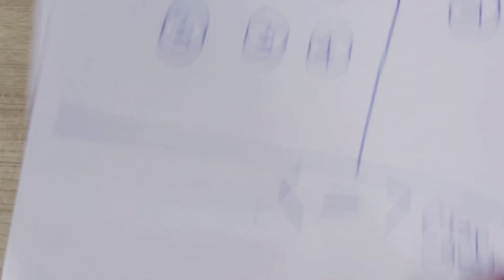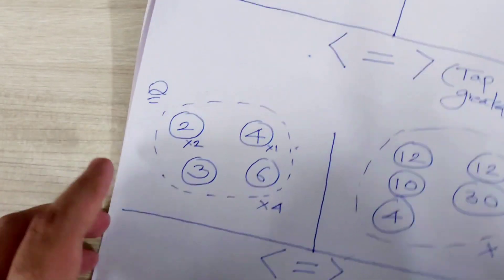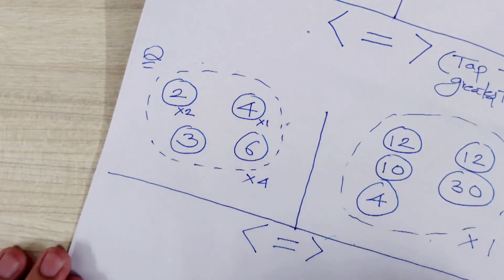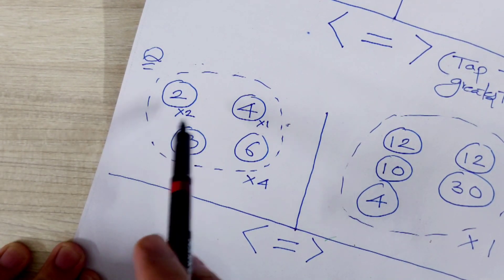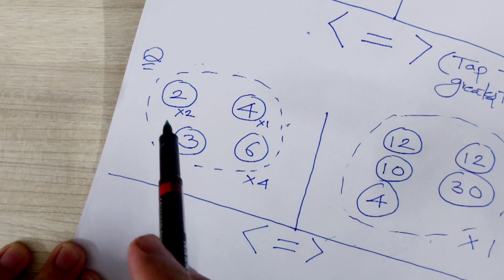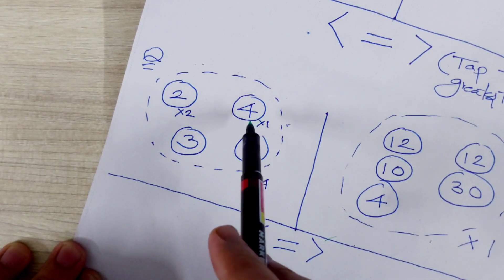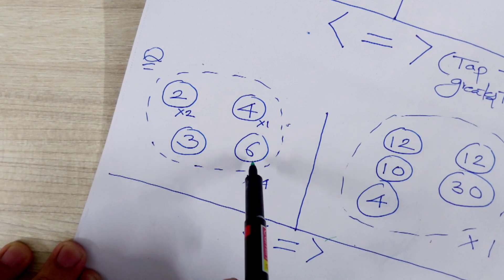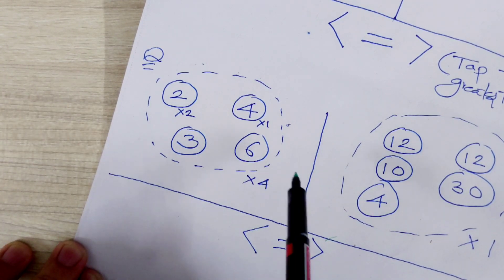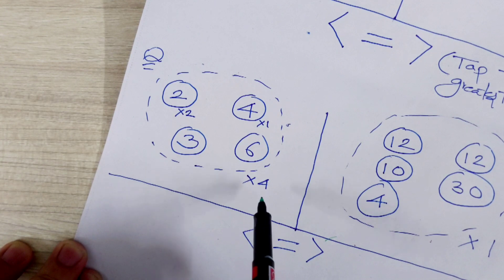Let's see another example. Like see this one. It is visible. So 2 into 2, 4. Like multiplication takes place in this way. 2 into 2, 4. 4 into 1, 4. 4 and 4, 8. 8 plus 3, 11. 11 and 6, 17. 17 into 4, 68.